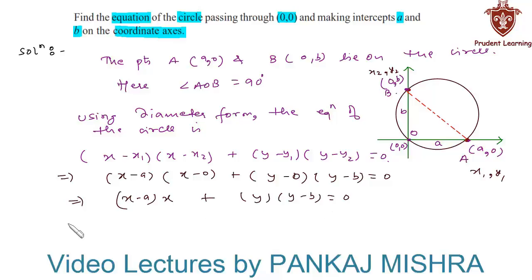Or we can say that x² - ax + y² - yb = 0. This can finally be written as x² + y² - ax - by = 0.